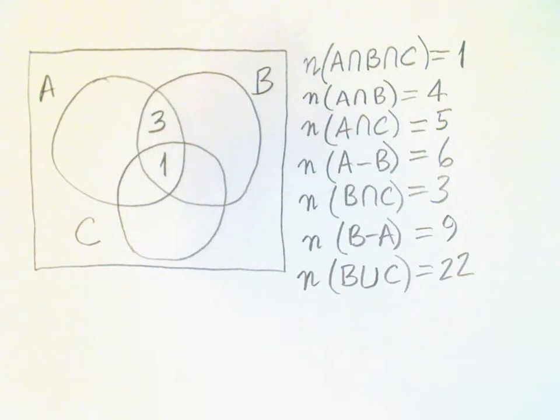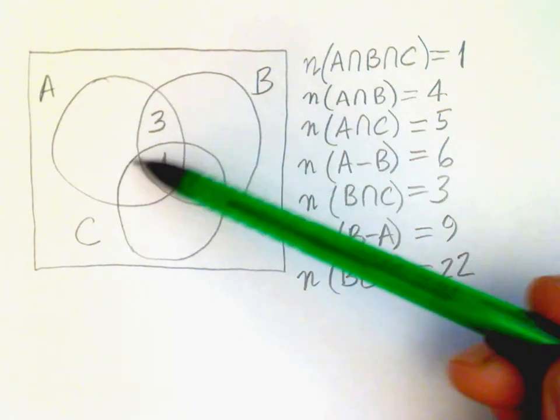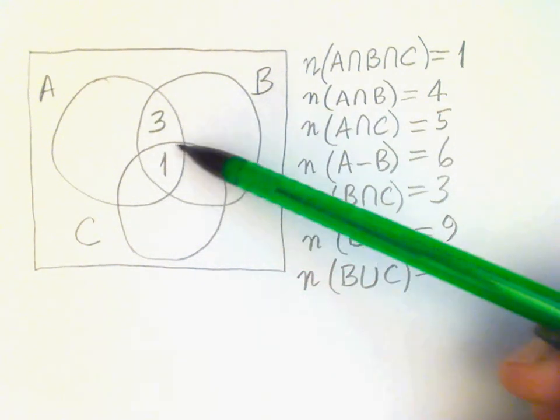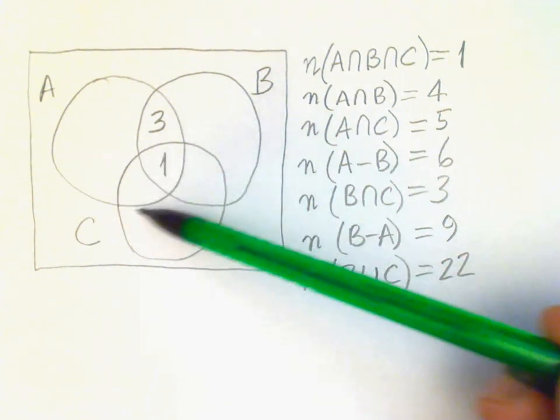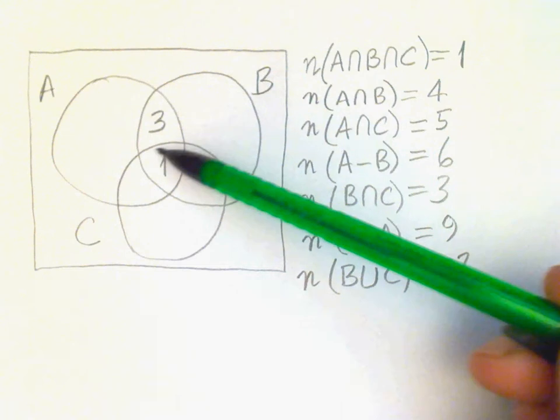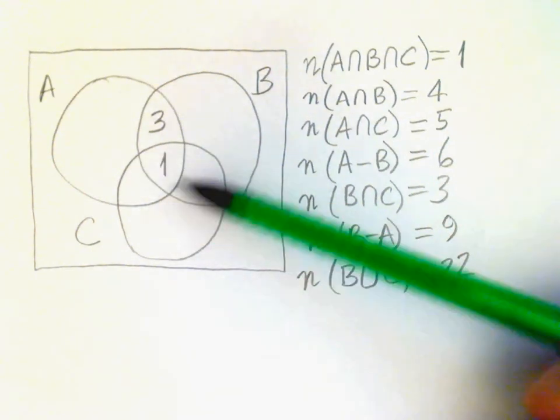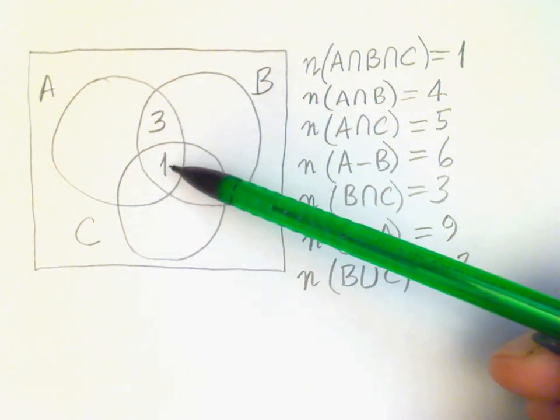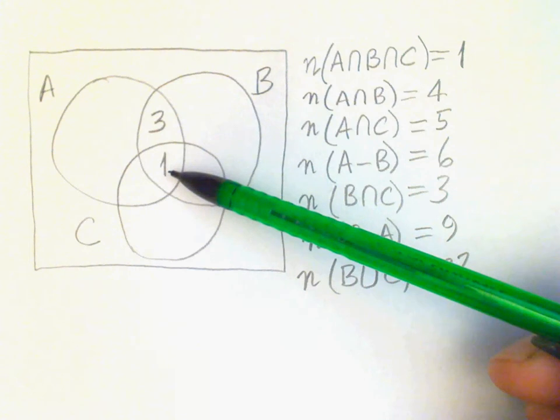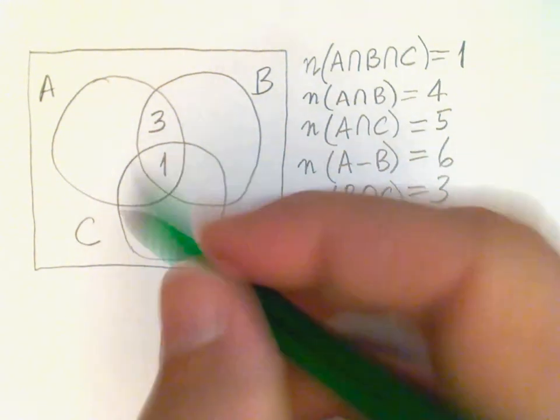Okay, we work our way down. Next bit of information, A intersect C has 5 units. Where is A intersect C in our diagram? Well, it's right here. That's where A and C overlap. Okay, if this region has 5 elements and this one already has 1, then there must be 4 in this region.